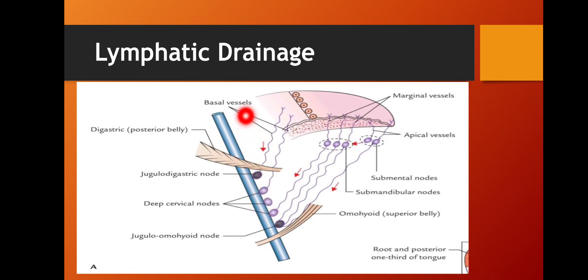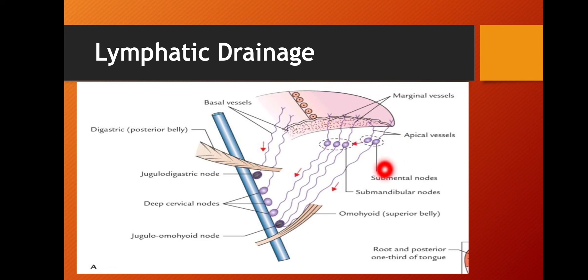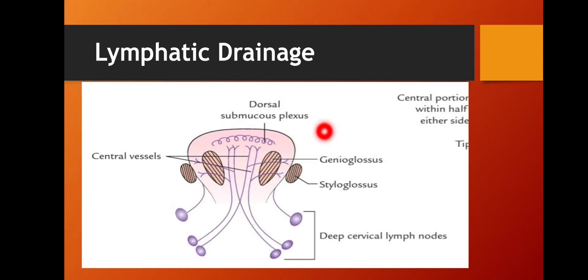Next, the basal vessels drain the base area of the tongue. These basal vessels are directly drained into the jugulo-omohyoid or deep cervical lymph nodes. The central vessels drain lymph from the central portion of the tongue and are drained into the deep cervical lymph nodes. If the tongue is asked as a LAQ, you must draw this diagram.